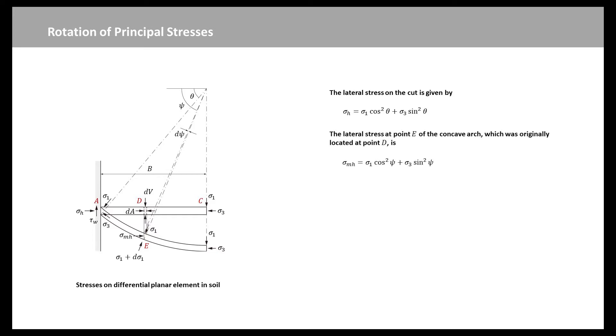Similarly, the lateral stress at point E of the concave arch, which was originally located at point D, is given by this equation, where psi is the angle between the tangent to the arch at point E and the vertical. Dividing this equation by sigma-1 and substituting sigma-3 over sigma-1 equal to 1 over n for the soil in the active condition, then we obtain this equation, where n is the ratio of major to minor principal stresses. As sigma-1 plus sigma-3 equal to sigma-v plus sigma-mh, substitution for sigma-mh gives this equation. Therefore, the vertical and lateral stresses acting at arbitrary points along a differential planar element in the soil can be calculated from the two equations.